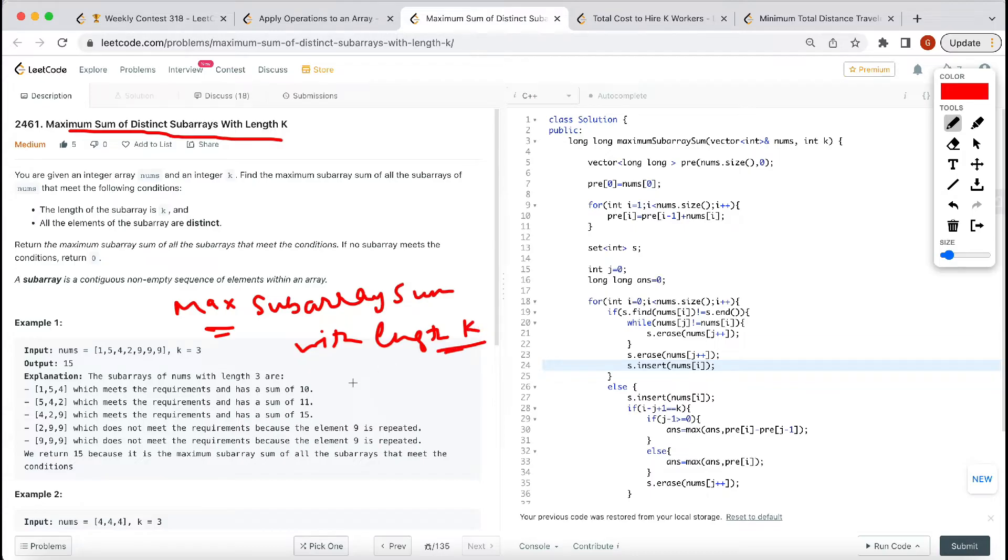With all elements distinct, how will we do this? It's a simple sliding window concept. Like this: one, one, five, four, two, nine, nine, nine. So first we will go to K size. If we get distinct elements, then we will store the answer.